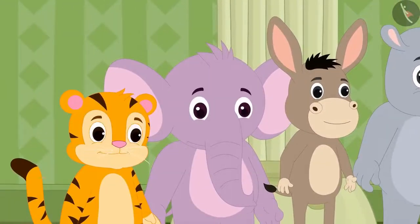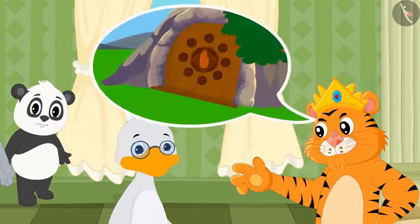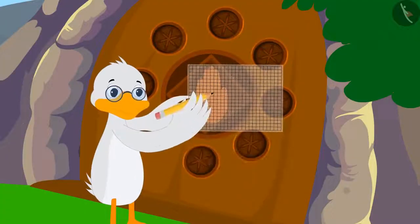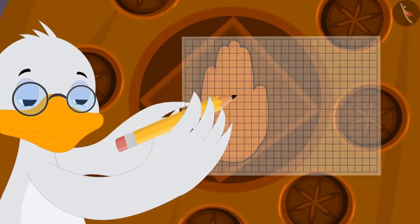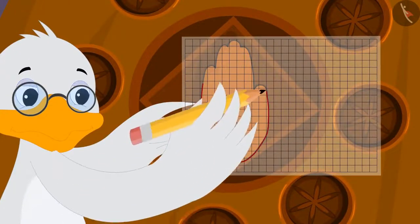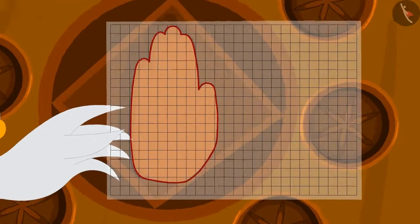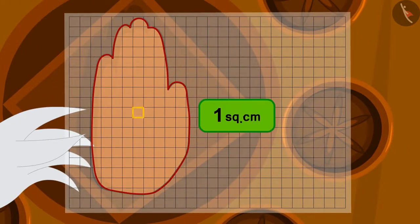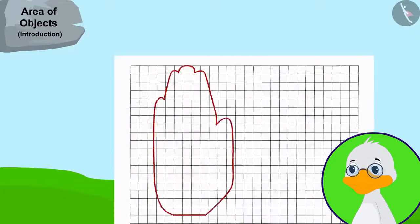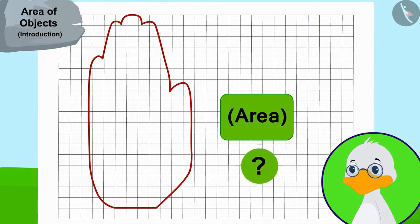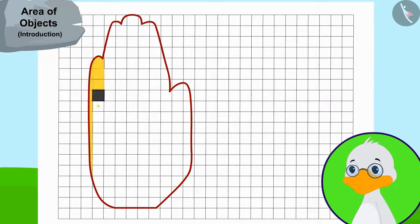The king of Champapur has entrusted Barbole uncle with the responsibility of finding the villager whose hand impression matches the hand impression on the door. Uncle immediately traced the hand impression on the door onto a paper. In this way, this paper has similar squares of one square centimeter each.